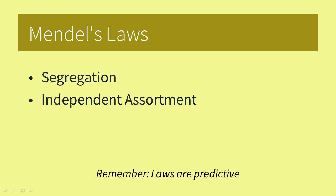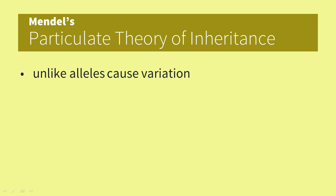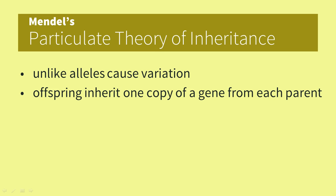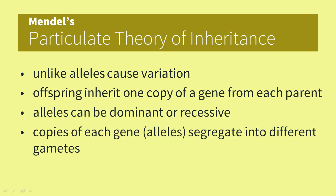Recall that laws are predictive, whereas theories help to explain what we observe in nature. Today Mendel's particulate theory of inheritance explains how traits are passed on from parents to offspring. Because unlike alleles exist for many genes, we have variation in the offspring. Offspring only inherit one allele of each gene from their parents because of meiosis — a parent has a diploid set of chromosomes but passes on a haploid set in their gamete. An allele can represent a dominant or a recessive trait, and these copies of each gene, or alleles, segregate into different gametes — in pea plants, these gametes are pollen and egg. Each gamete fuses randomly with a gamete of the other parent.